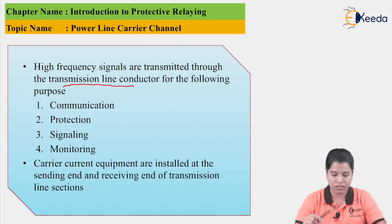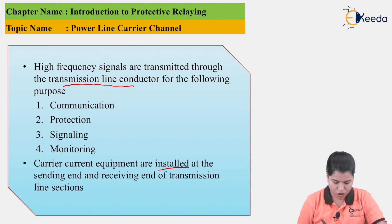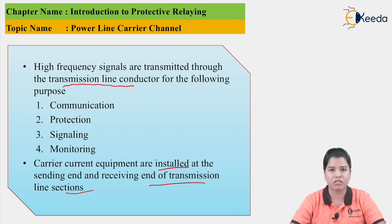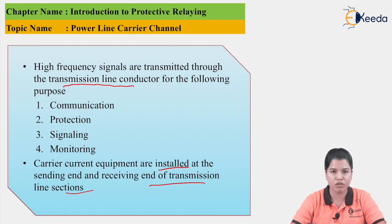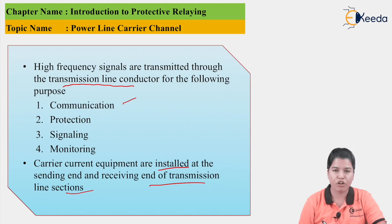The carrier current equipment are installed at the sending end and receiving end of the transmission line sections, so that signals can be sent from the sending end to the receiving end. These signals are basically of high frequency. By sending these signals, we can perform the functions of communication, protection, signaling, and monitoring.